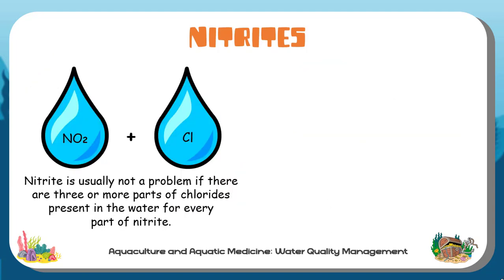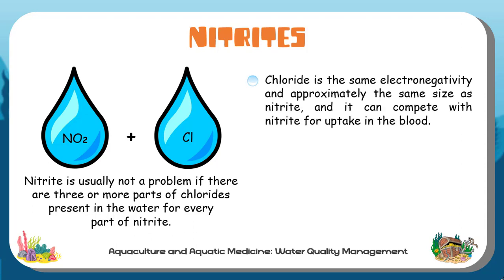Nitrite poisoning earns the name brown blood disease because nitrite interferes with oxygen uptake by the blood. Nitrite is usually not a problem if there are three or more parts of chlorides present in the water for every part of nitrite. Chlorides do not affect the amount of nitrite in the water but prevent the uptake of nitrite by the blood of the fish. Chloride has the same electronegativity and approximately the same size as nitrite and can compete with nitrite for uptake in the blood.